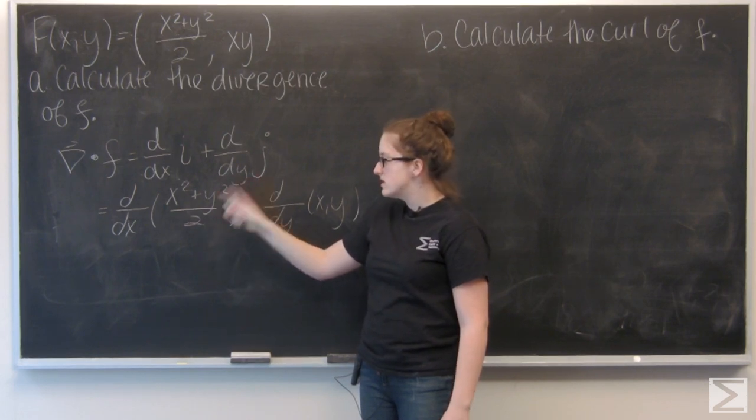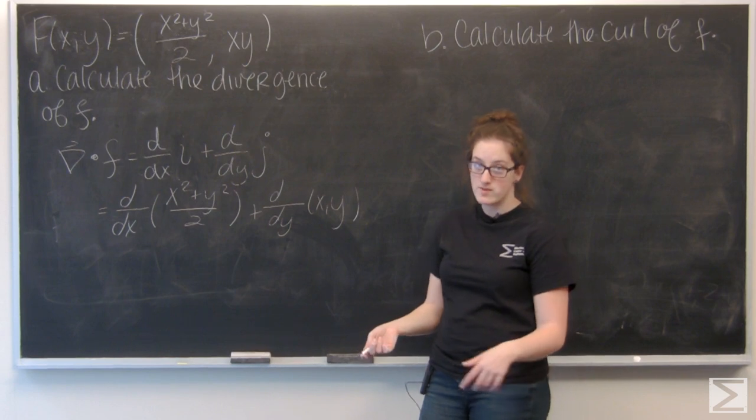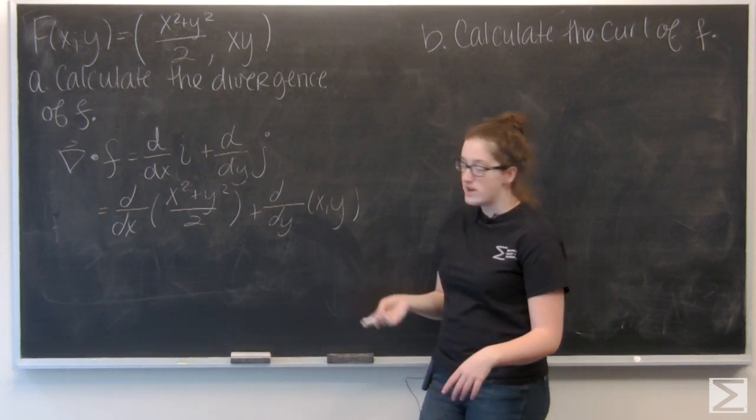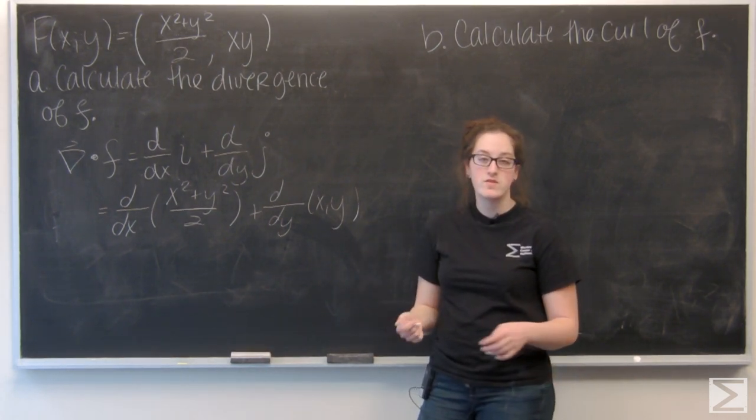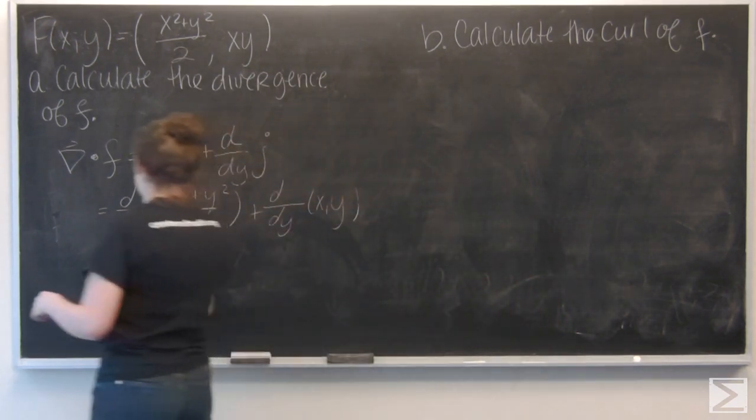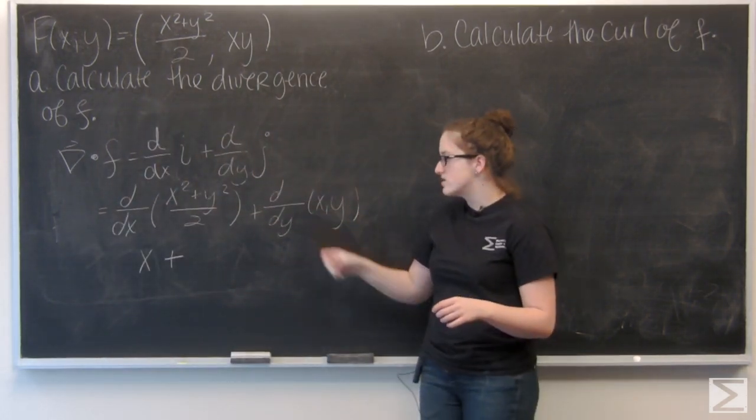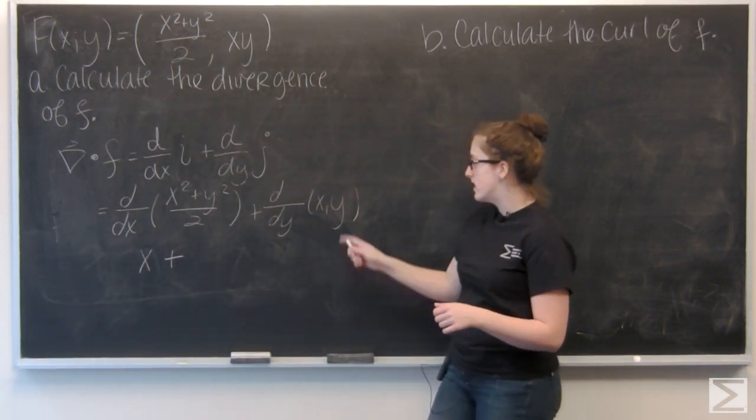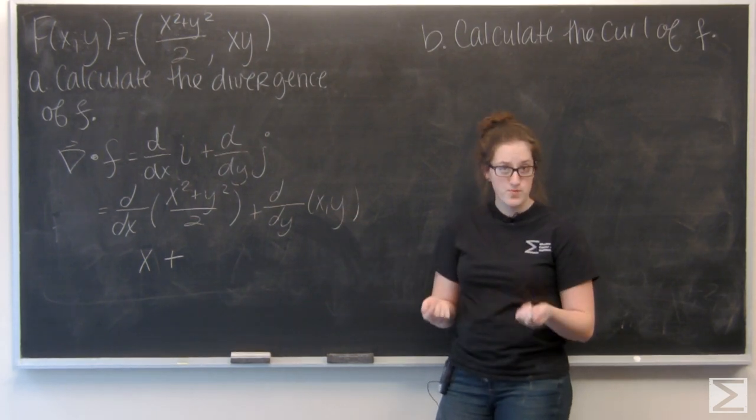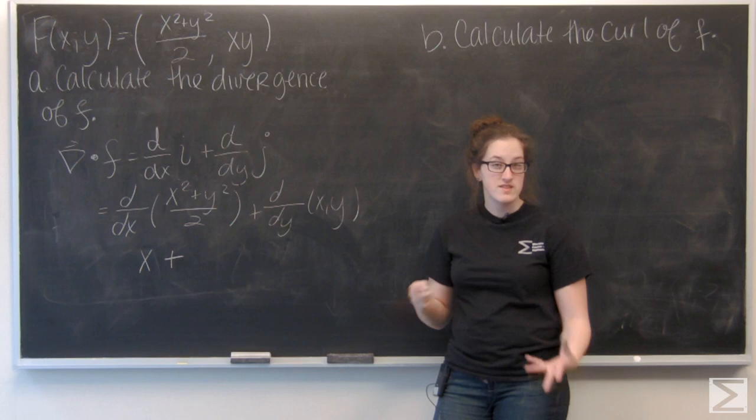Well, here I have, it could be like 1 half x squared plus 1 half y squared. And then, 1 half y squared is a constant, and the derivative of 1 half x squared is going to be x. And then for the second term, the partial derivative of xy with respect to y is going to be x because x is just treated like a constant.